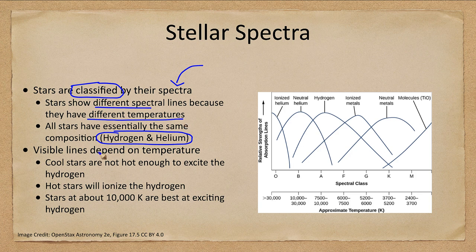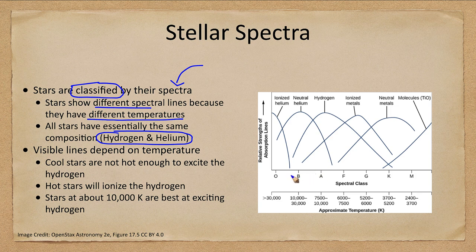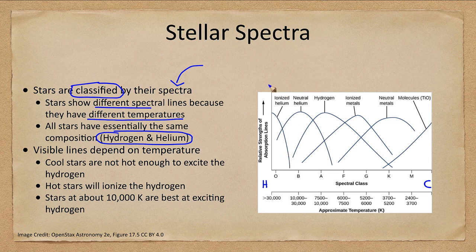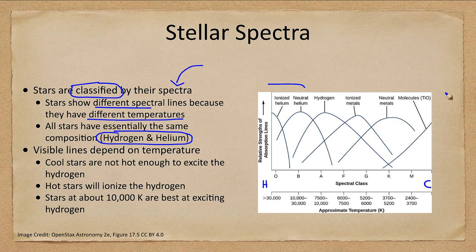What lines are visible depend on the temperatures, and here we see a graph showing the spectral classes from hot stars on the left to cooler stars on the right. The very hot stars have things like helium, they're able to excite the helium. A cool star doesn't have the energy to excite helium so it doesn't show helium lines.